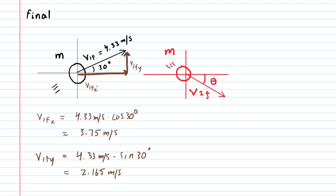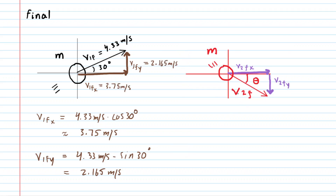We'll label those on the diagram, and then find expressions for the final velocity of ball two. Ball two is interesting because we do not know the final velocity, nor do we know the angle. So the best we can do is set up expressions for the x and y components. The x component is adjacent to the angle, so we take the final velocity v2-final and multiply by the cosine of the unknown angle. The y component is opposite the angle, so that's v2-final times the sine of the angle.